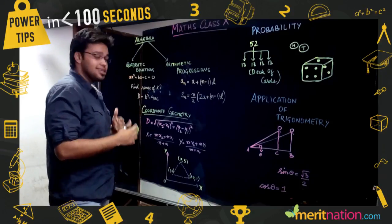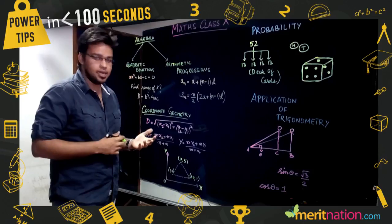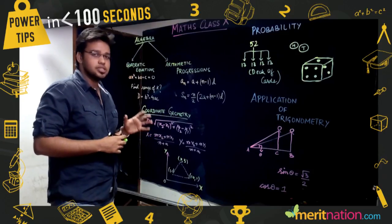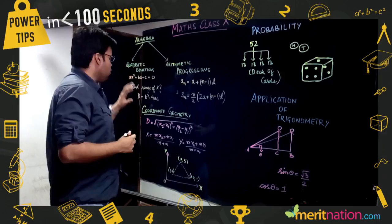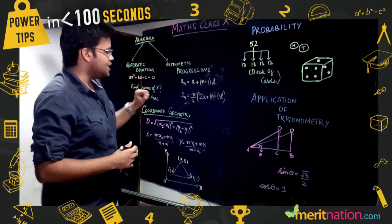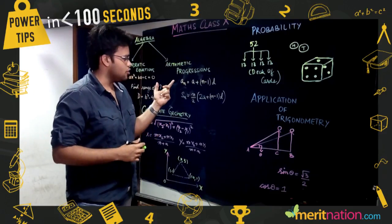Second, finding the range of k for different values of discriminant. Third, finding the relationship of the discriminant with the nature of roots. Moving on to Arithmetic Progressions, it has basically two formulas: one for nth term and another for sum of n terms.